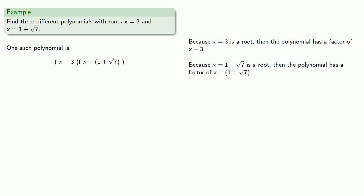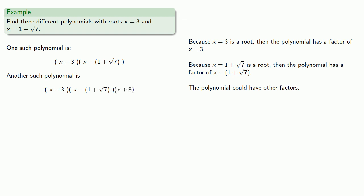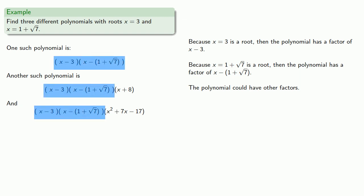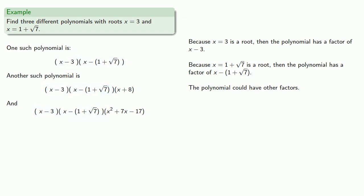Now the polynomial could have other factors. For example, we could get another such polynomial by including a factor of x plus 8. Or we could make another polynomial by including a different factor, like x squared plus 7x minus 17. As long as we keep the factors x minus 3 and x minus (1 plus square root of 7), the polynomial will have roots 3 and 1 plus square root of 7, plus possibly some other roots.